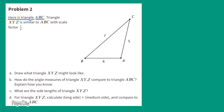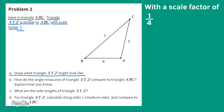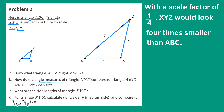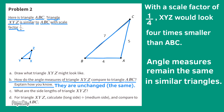Problem number 2. Here is triangle ABC. Triangle XYZ is similar to ABC with scale factor 1 fourth. Part A: Draw what triangle XYZ might look like. With a scale factor of 1 fourth, XYZ would look 4 times smaller than ABC. Part B: How do the angle measures of triangle XYZ compare to triangle ABC? Angle measures remain the same in similar triangles, so the angle measures are unchanged.